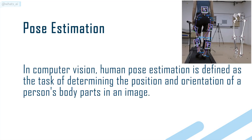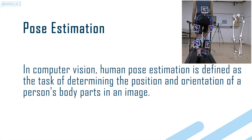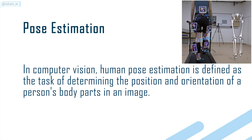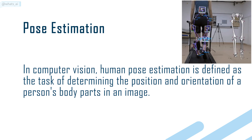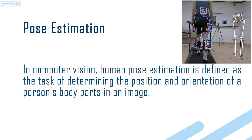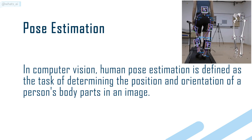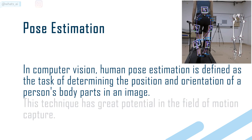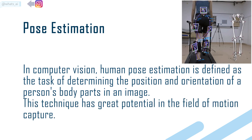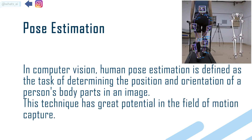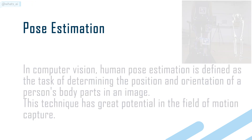In computer vision, human pose estimation is defined as the task of determining the position and orientation of a person's body parts in an image. This technique has great potential in the field of motion capture.